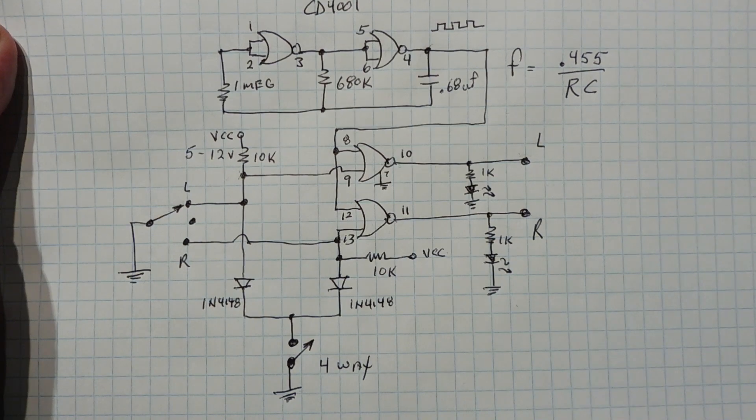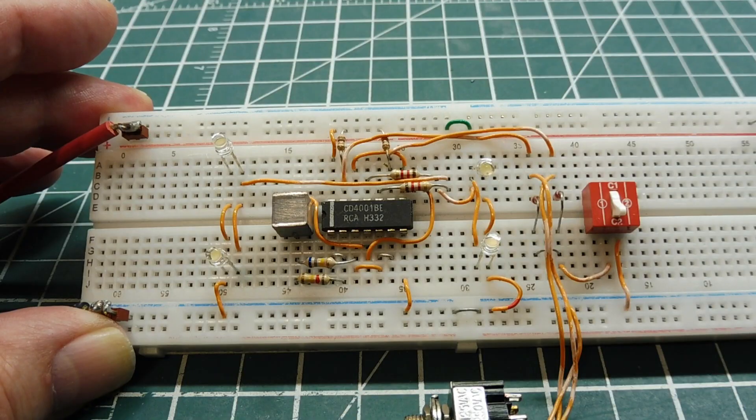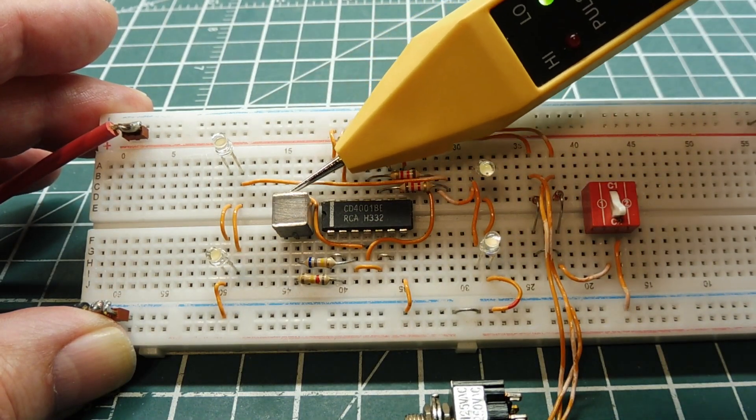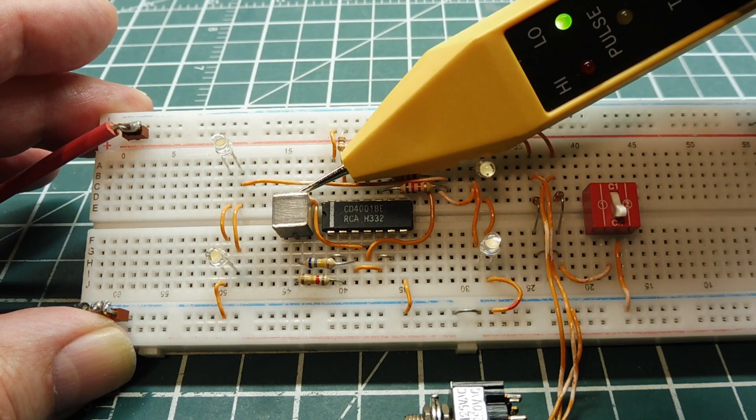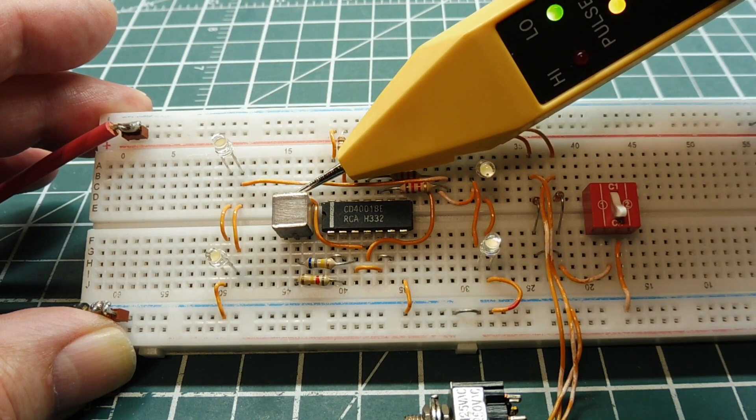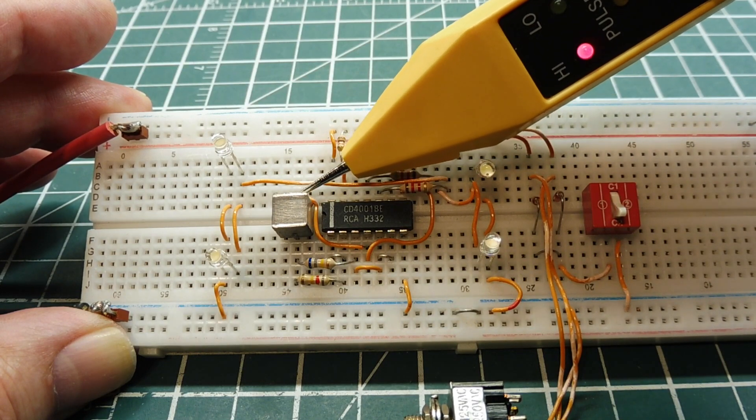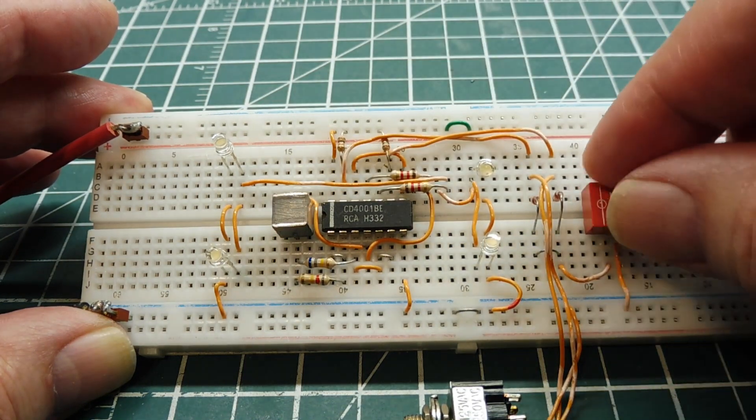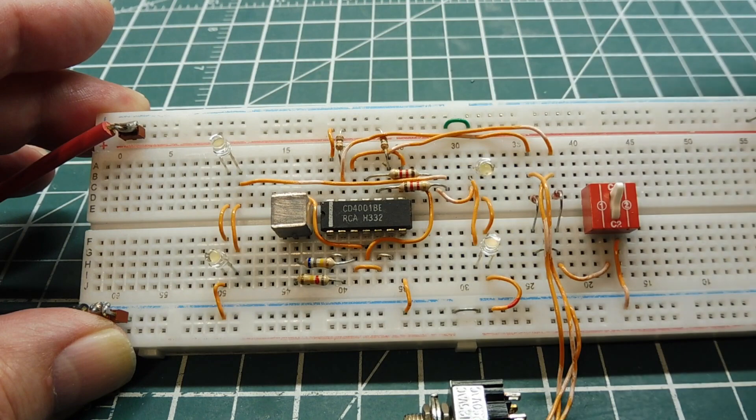Now the RC oscillator that gives us our flashing rate is always running. You can see that with a logic probe, it's indicating it's running even though there's no output because we're not gating the NOR gates with any of our switches. Now if I turn on the four-way, you can see it syncs to the clock.